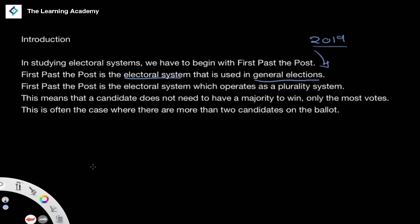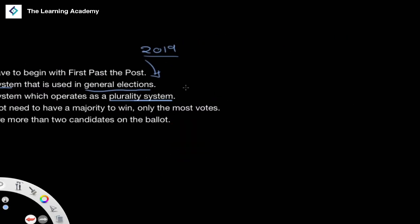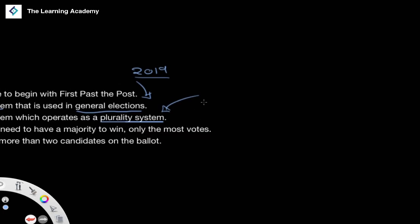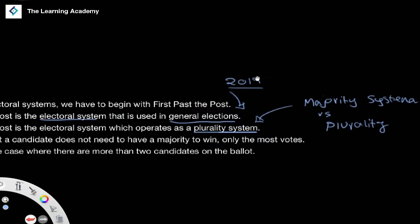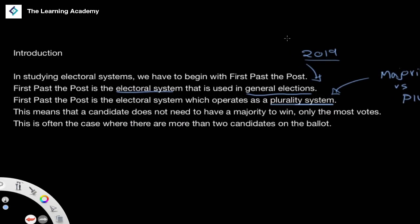First-past-the-post operates as what we call a plurality system. There are different types of electoral systems — for example, there is a difference between a majority system and a plurality system. With a majority system, if you want to win a particular constituency, you have to get 50% or more. With a plurality system, all you need is more than second place — you could get 30% of the votes, the person in second gets 28%, and you would still win.